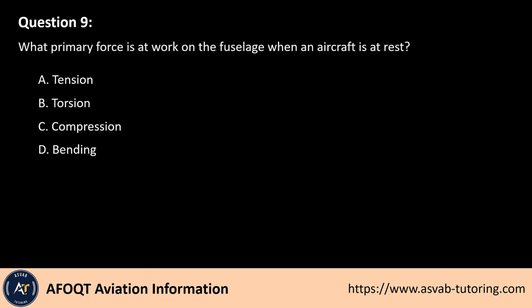Question 9. What primary force is at work on the fuselage when an aircraft is at rest? A. Tension. B. Torsion. C. Compression. D. Bending.